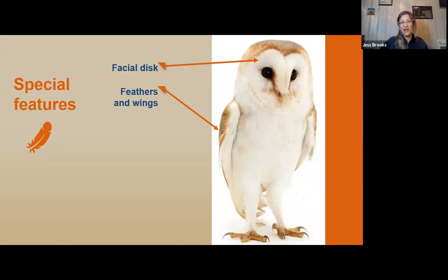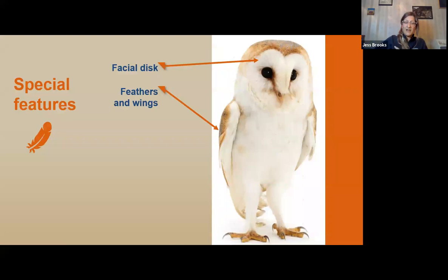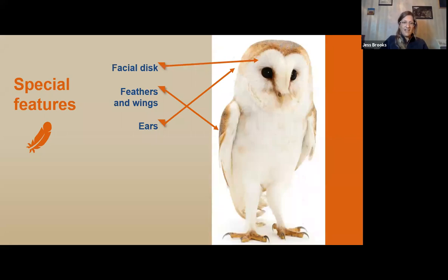Owls have special structures along the leading edge of their wings. When the wind hits that edge first, the special structure breaks up that air so they fly silently to help sneak up on their prey. Owls' ears, for the most part, are asymmetrical or lopsided — one ear is higher than the other on their skull. Typically their right ear is slightly higher than their left. This helps them in a dark environment to hear everything they can and find their prey.